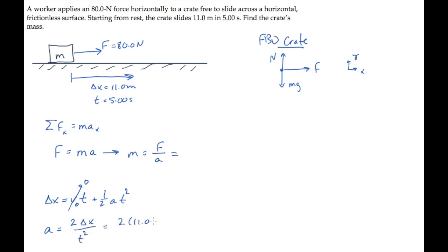Substitute the numbers to find that the crate's acceleration is 0.880 meters per second squared. Now we can come back up here and substitute the known numbers. The crate's mass is the pushing force, 80 newtons, divided by the acceleration, and when you calculate, you find that it equals 90.9 kilograms.